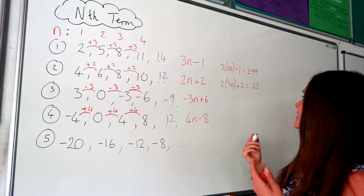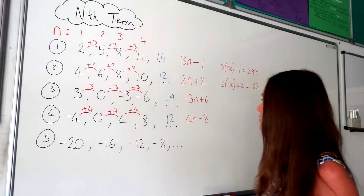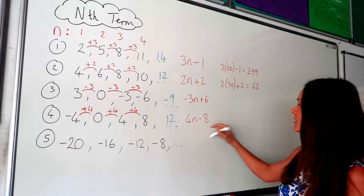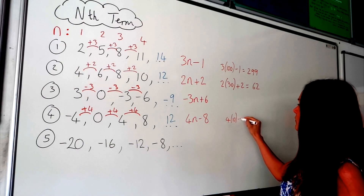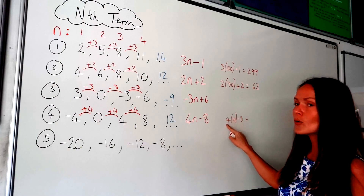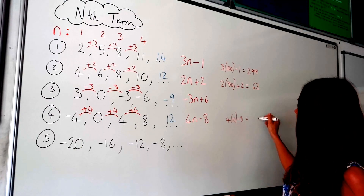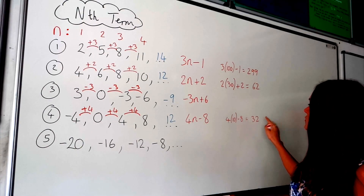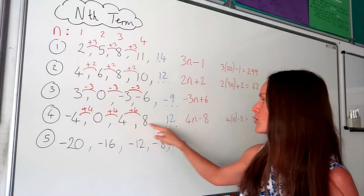If we want to find the tenth number in this sequence, I change n to 10: 4 times 10, then subtract 8. Well, 4 times 10 is 40, and 40 take away 8 is 32. So 32 is the tenth number in this sequence.